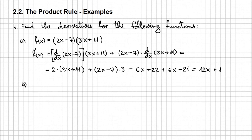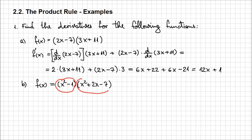Now let's consider another example, b, where f(x) = (x² - 1)(x² + 2x - 7). Once again, looking overall, I have the product of two expressions — whatever those expressions might be — so basically two other functions g and h. The derivative f prime of x is going to be evaluated more directly than the first time.